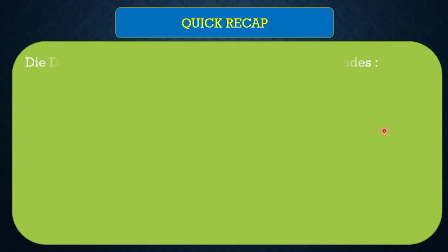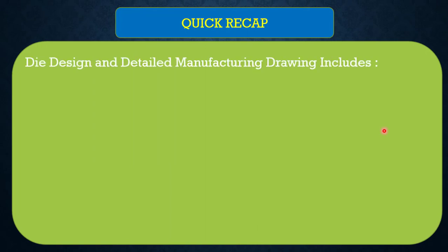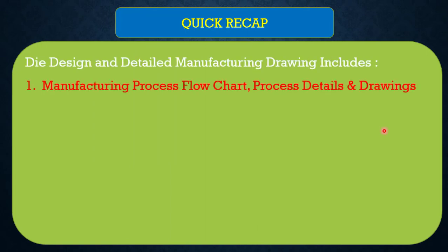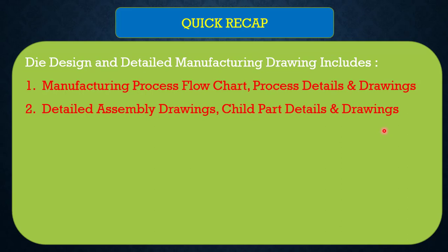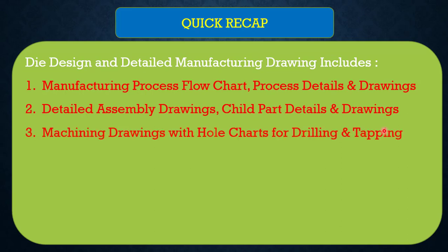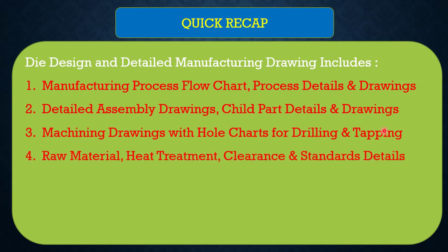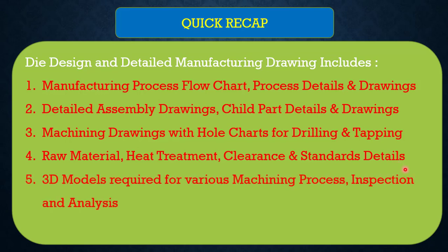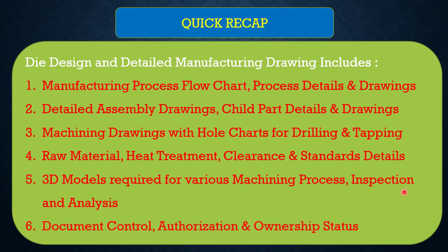Quick recap: Die design and detail manufacturing drawing includes: 1) manufacturing process flowchart, process details and drawings; 2) detailed assembly drawings, child part details and drawings; 3) machining drawings with hole charts for drilling and tapping; 4) raw material, heat treatment, clearance and standard details; 5) 3D models required for various machining processes, inspection and analysis; 6) document control, authorization and ownership status.